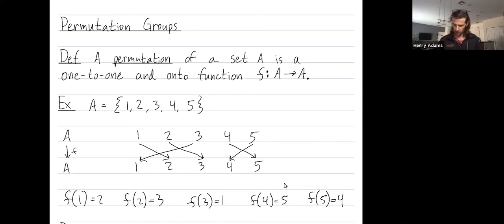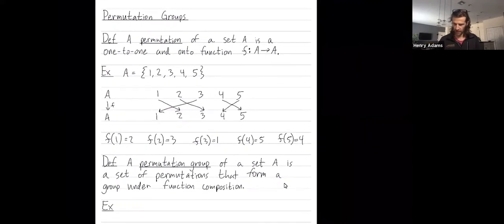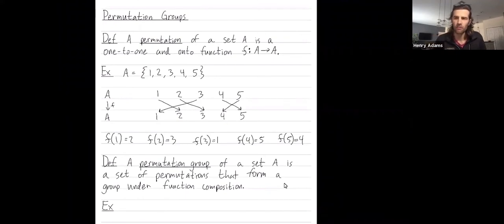What is a permutation group? A permutation group of a set A is a collection of permutations that form a group under function composition. And I'll explain function composition in this video.